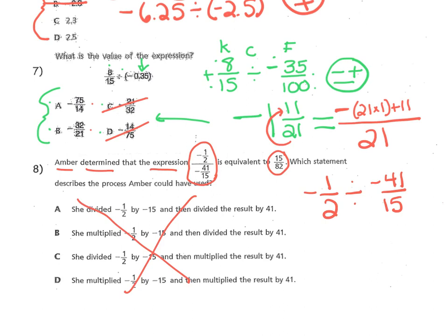But for fraction division, I hope you remember from 6th grade, we do keep it, change it, flip it. And we rewrite it as negative 1/2 times... Now apply the negative to the numerator. Negative 15 over 41. And we are doing, of course, Margar multiplication. We're taking two negative values, and you know we're going to get a positive value.